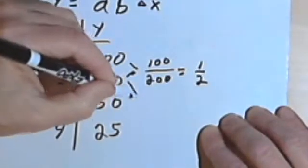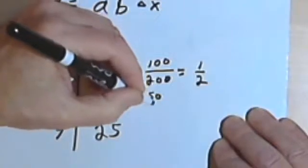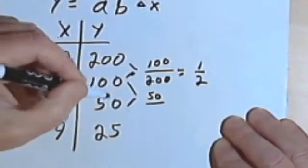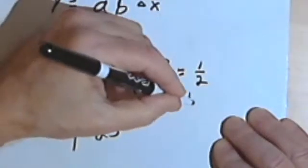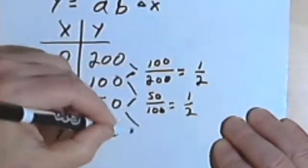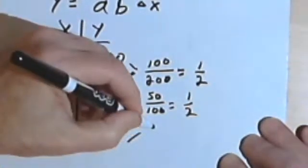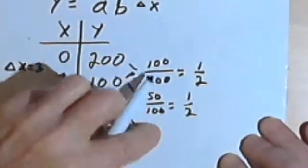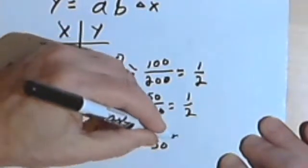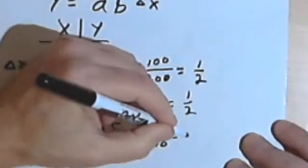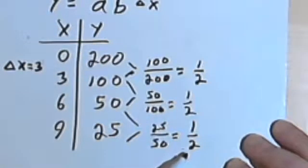I'll take the next pair of numbers, 150, so that means my fraction is going to be 50 over the number just above the 50, which is 100, and that'll be one-half. And if I take the third pair of numbers, 50 and 25, I want 25 as my numerator, 50 as my denominator, and 50 over 25 equals one-half. So b is one-half.